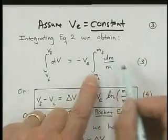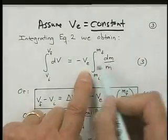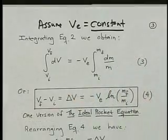But in this case, if it's constant, we can take it out of the integral, bring it out in front, and just do the integral of dm over m.